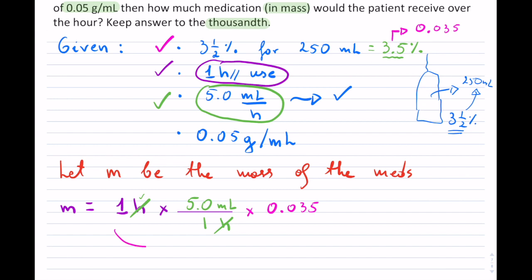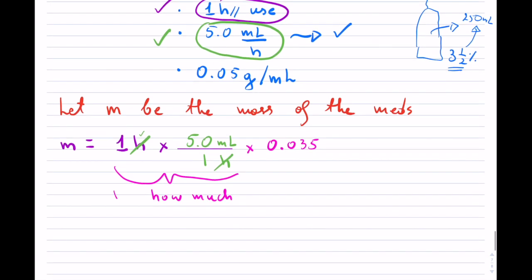So I have how much they have taken in. This is how much in total. Then next, if I do times the 3.5%, this tells me how much within that 5 mL is the actual medication.